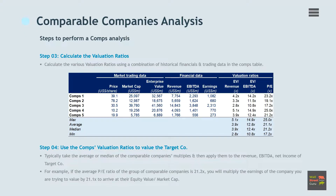Step 4: Use the comps valuation ratios to value the target company. Analysts will typically take the average or median of the comparable company's multiples and then apply them to the revenue, EBITDA, net income, or whatever metrics they included in the comps table. In order to come up with a meaningful average, they often remove or exclude outliers and continually massage the numbers until they seem relevant and realistic.